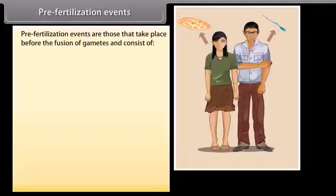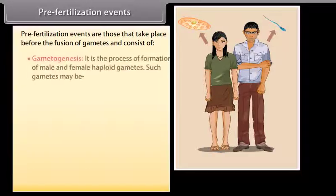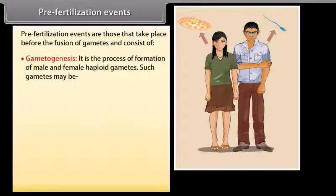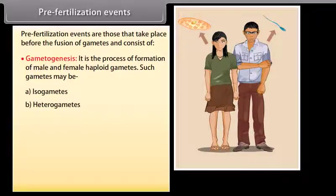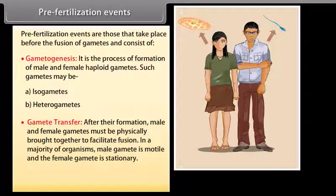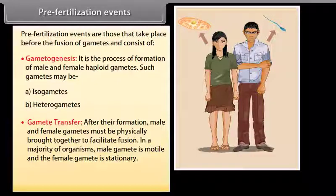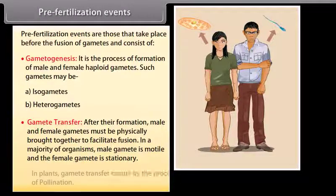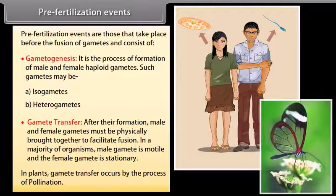Pre-fertilization events are those that take place before the fusion of gametes and consist of gametogenesis — the process of formation of male and female haploid gametes. Such gametes may be isogametes or heterogametes. After their formation, male and female gametes must be physically brought together to facilitate fusion. In a majority of organisms, the male gamete is motile and the female gamete is stationary. In plants, gamete transfer occurs by the process of pollination.